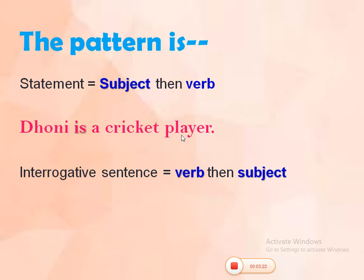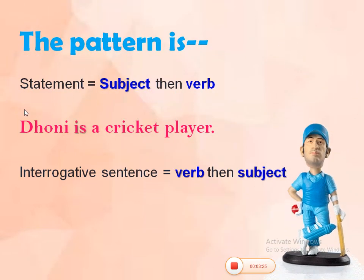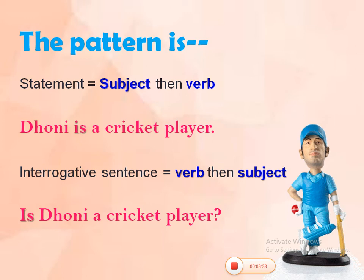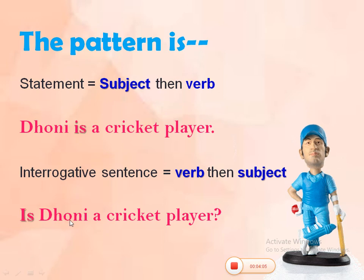'Dhoni is a cricket player.' Here 'Dhoni' is the subject and 'is' is the auxiliary helping verb. When we change it into interrogative, it becomes 'Is Dhoni a cricket player?' The verb in the statement becomes the asking word in the interrogative sentence — the verb comes first, then the subject Dhoni.